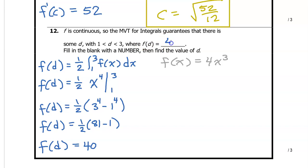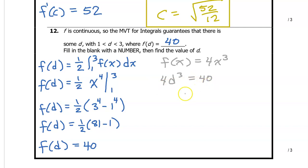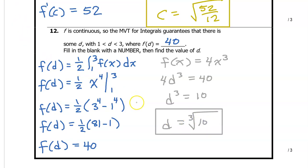40 is the number that goes in the blank: f at d is equal to 40. Now we need to find the value of d guaranteed by the mean value theorem for integrals. f at d equals 40 means if we substitute d in for x, it should equal 40. So 4 times d to the third power equals 40. Dividing both sides by 4, d to the third power equals 10. Taking the cube root of both sides, d equals the cube root of 10. That's the final answer for number 12.